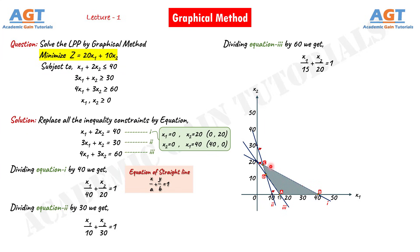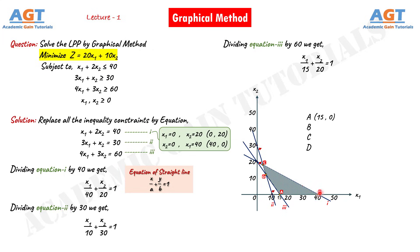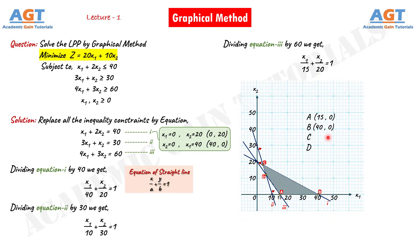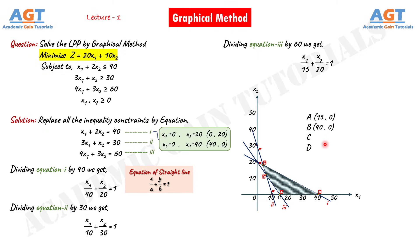We have found our feasible region and its four extreme corner points A, B, C, and D. Now we need to find the values of these extreme points. We already know point A is (15, 0), meaning x1 is 15 and x2 is 0, and point B is (40, 0). However, we don't know the values of points C and D, so we need to find them through calculation.